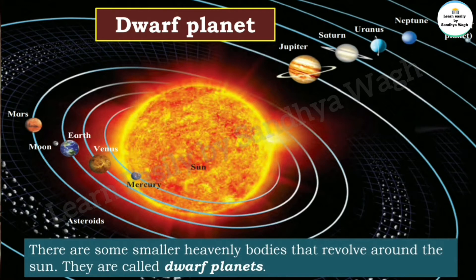Now let's learn about dwarf planets. 'Dwarf' means small or tiny. In Marathi we call them 'baḍū grah' or 'laghu grah.' There are some smaller heavenly bodies in our solar system that revolve around the sun — they are called dwarf planets.